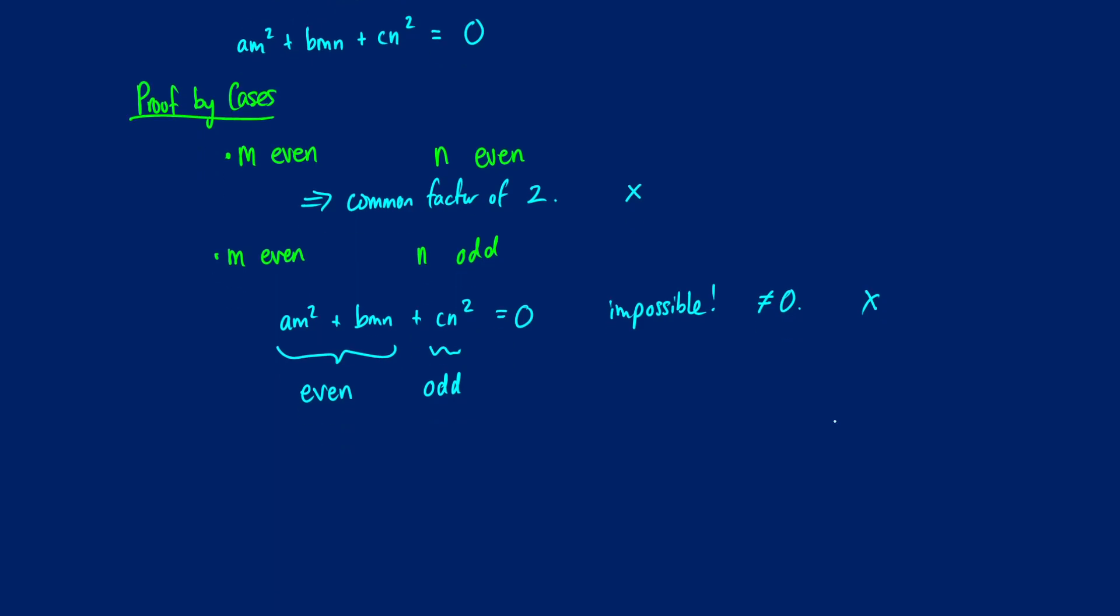So what happens then by cases if we have m odd? So let's start with that. Okay, one case we can have is that n is then going to be even. So if we take a look at our formula, am squared plus bmn plus cn squared is equal to 0, what's going to happen here?